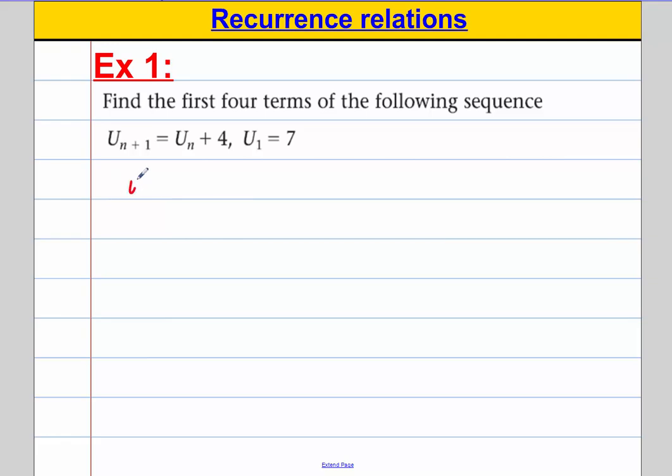So we would start off by saying u1 is equal to 7. We would then work out u2. u2 is equal to u1, the one before it, add 4. So u2 would be equal to 7, add 4. u2 would equal 11. So we've got the first term and the second term.